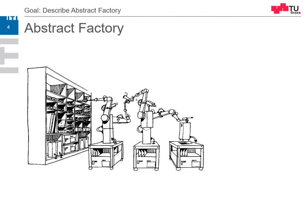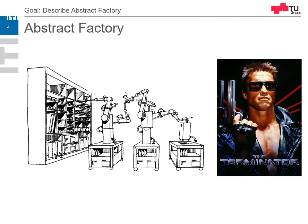An Abstract Factory is factories building factories — machines building machines — like the theme of Terminator. Thank you very much and have a good day.